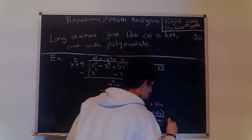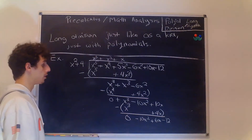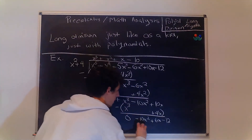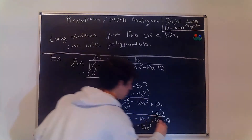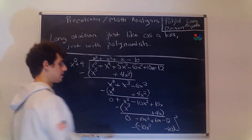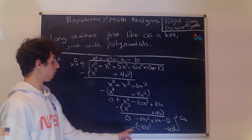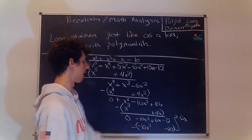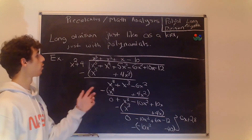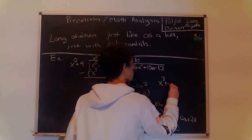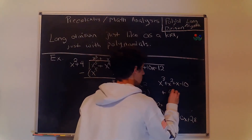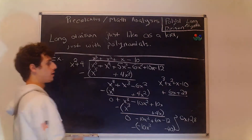We bring our constant term down — that's minus 12. Now we have negative 10x squared divided by x squared, which is just minus 10. We multiply to get minus 10x squared and minus 40. We group and subtract, and notice 6x stays the same. We have negative 12 plus 40 because of the minus signs, giving us 28. So our remainder is 6x plus 28. The final quotient is x cubed plus x squared plus x minus 10, plus 6x plus 28 over x squared plus 4.